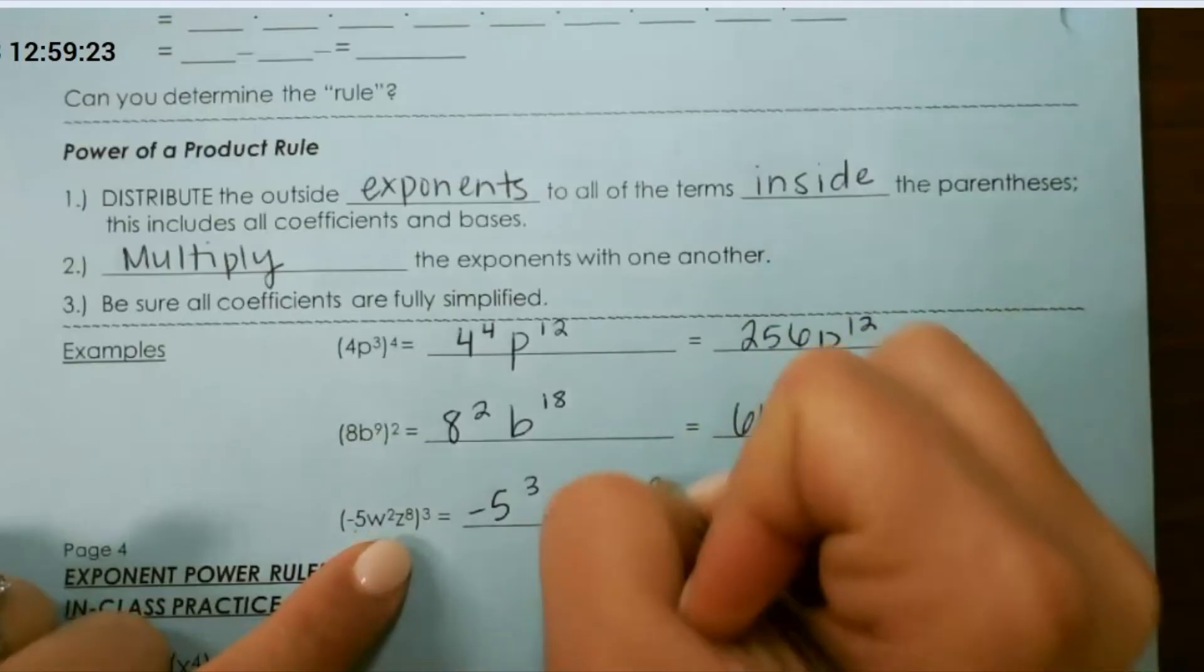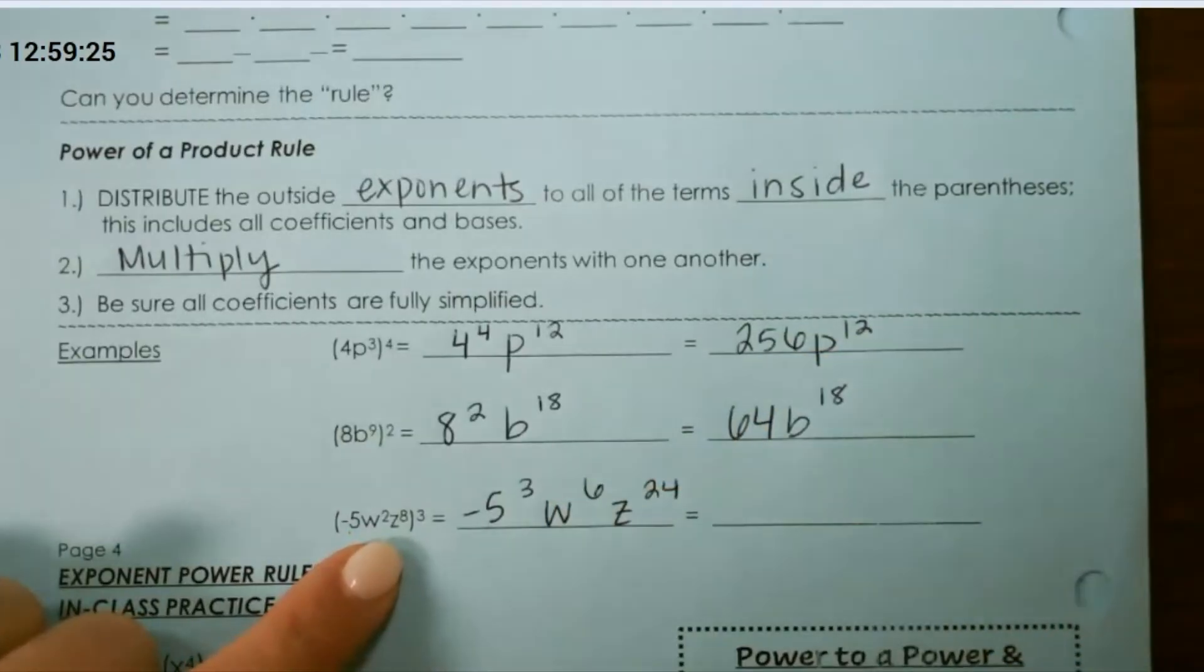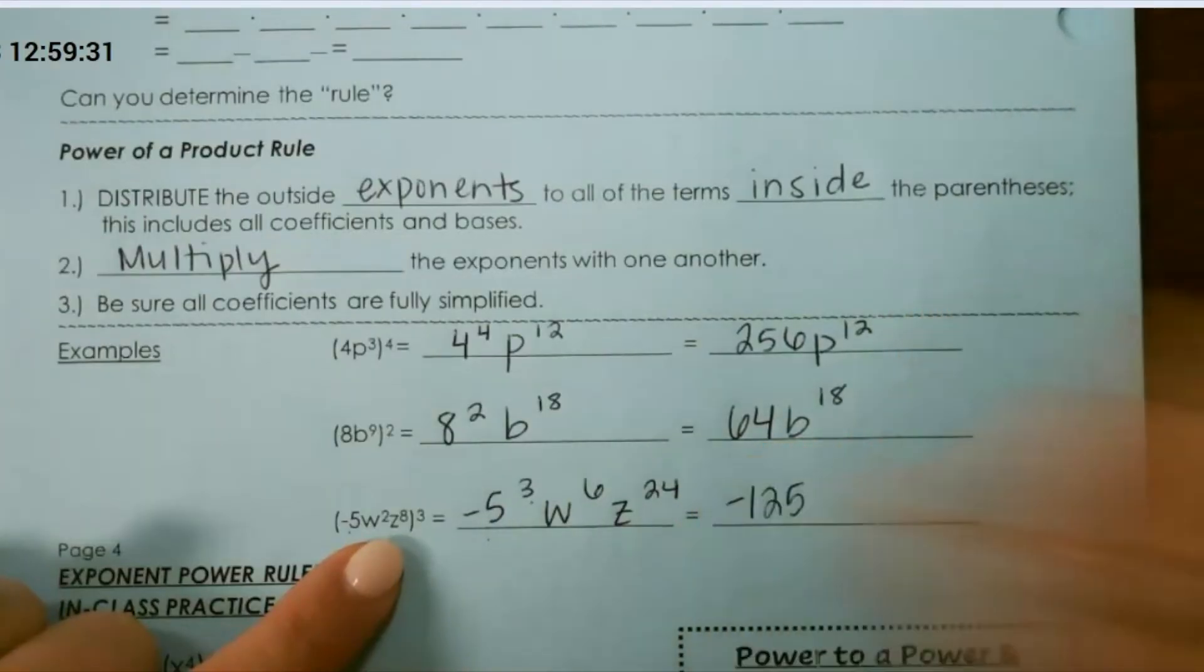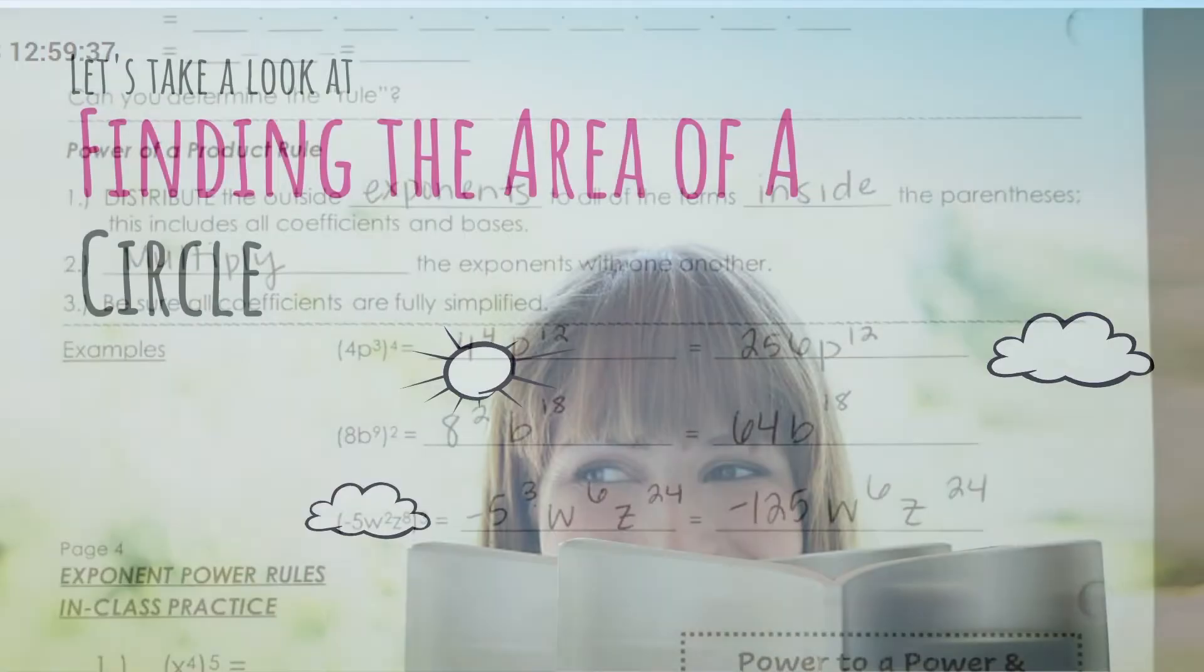and z to the twenty-fourth power because 8 times 3 is 24. We can evaluate negative 5 to the third power, which gives us negative 125, w to the sixth, z to the twenty-fourth. Thank you.